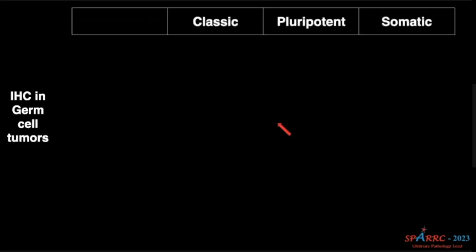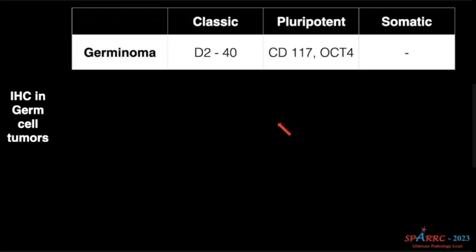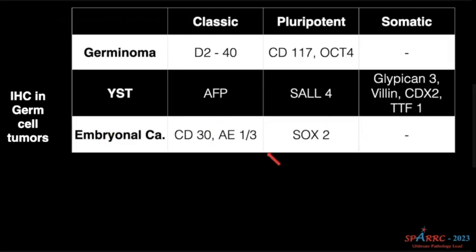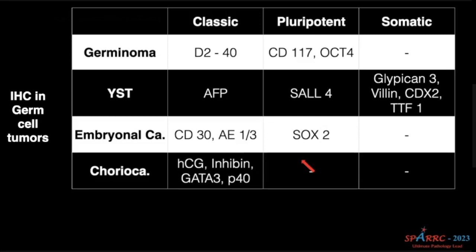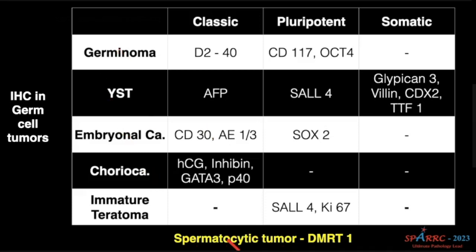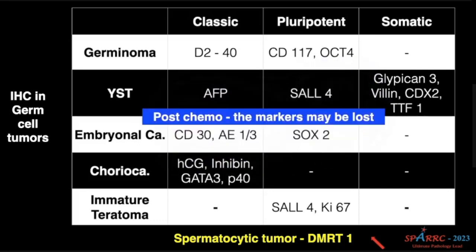IHC in germ cell tumors: there are some classic markers, pluripotent markers, and somatic markers. For germinoma, OCT4 — please remember OCT4. For yolk sac tumor, SAL4. For embryonal carcinoma, SOX2 and CD30. For choriocarcinoma, you all know beta-HCG, but the new marker is GATA3 and P40. And for immature teratoma, SAL4 and KI-67. The spermatocytic tumor is well away from these germinomas — previously it was called spermatocytic seminoma, but that word seminoma is replaced by tumor and it has a specific marker DMRT1. Please remember: post-chemotherapy, these markers may be lost. In any post-chemo or post-radiation patient, please interpret the IHC carefully.